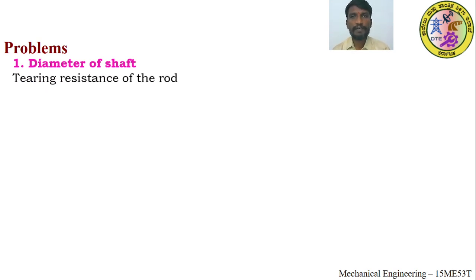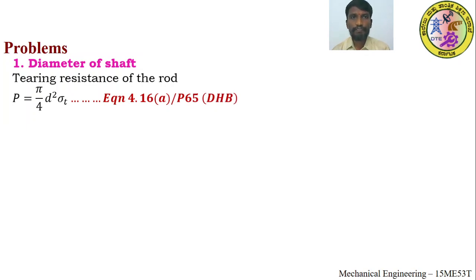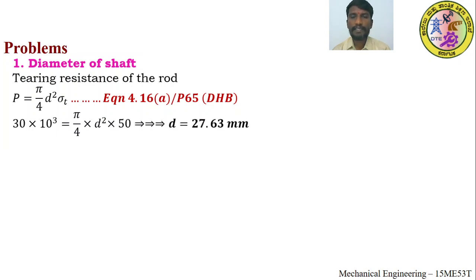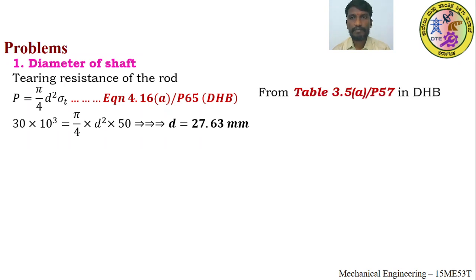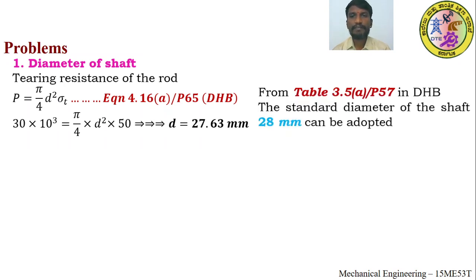Point 1 — Diameter of shaft: Using the tearing resistance of the rod (equation 4.16a, page 65), the calculated diameter is 27.63 mm. From standard table 3.5a (page 57), the standard shaft diameter is adopted as 28 mm.